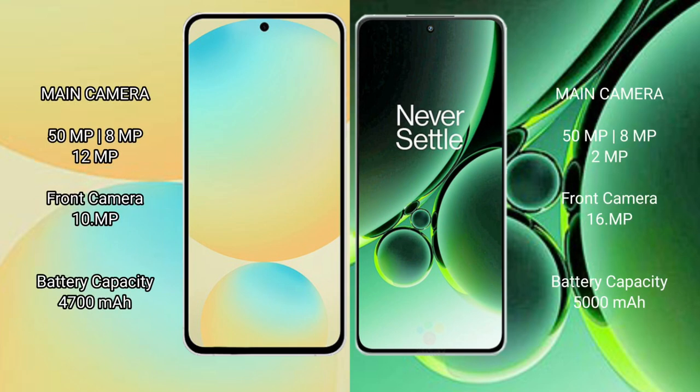Samsung Galaxy S24 FE features a triple camera setup: 50MP plus 8MP plus 12MP, and a 12MP front camera. Samsung Galaxy S24 FE has a 4700mAh battery with 25W fast charging support. OnePlus Nord 3 has a 5000mAh battery with 80W fast charging support.